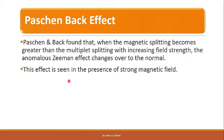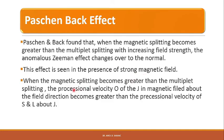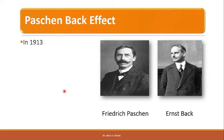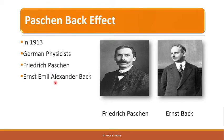This effect is seen in the presence of a strong magnetic field. When the magnetic splitting becomes greater than the multiplet splitting, the precessional velocity of the J vector about the field direction becomes greater than the precessional velocity of S and L vectors about J. In 1913, two German physicists Friedrich Paschen and Ernst Back observed this effect when studying Zeeman splitting in a strong magnetic field.